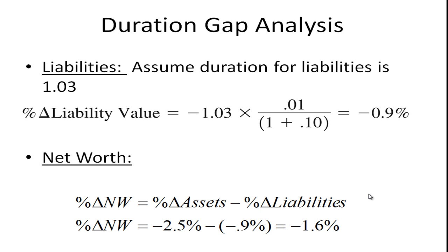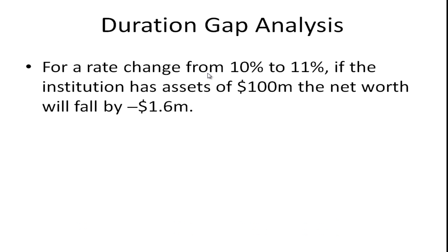Likewise, we can do the same thing for the duration of liabilities. Assume the duration of liabilities is 1.03. The percentage change in liability value is minus 1.03 — minus the duration — times the change in interest rates of 1%, divided by 1 plus the interest rate, giving us minus 0.9%. The percentage change in net worth equals the percentage change in assets minus the percentage change in liabilities: minus 2.5% minus negative 0.9% equals minus 1.6%. So for a rate change from 10% to 11%, if the institution has assets of a hundred million, net worth will fall by 1.6 million.